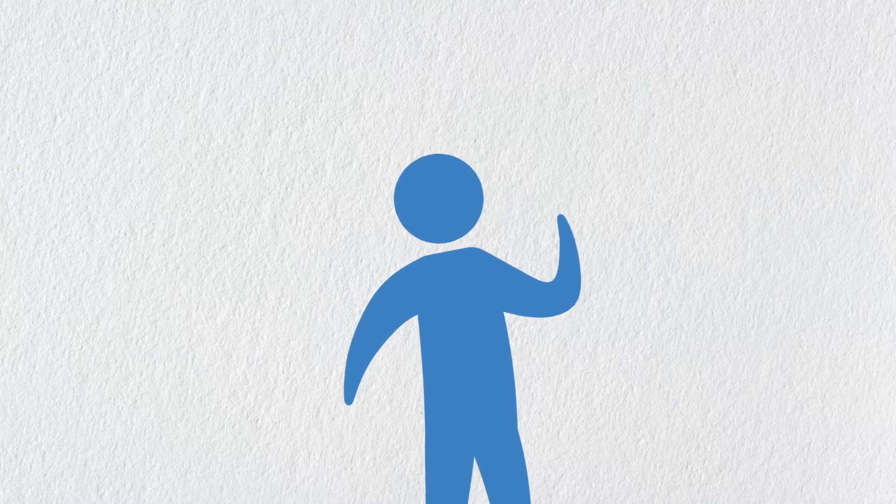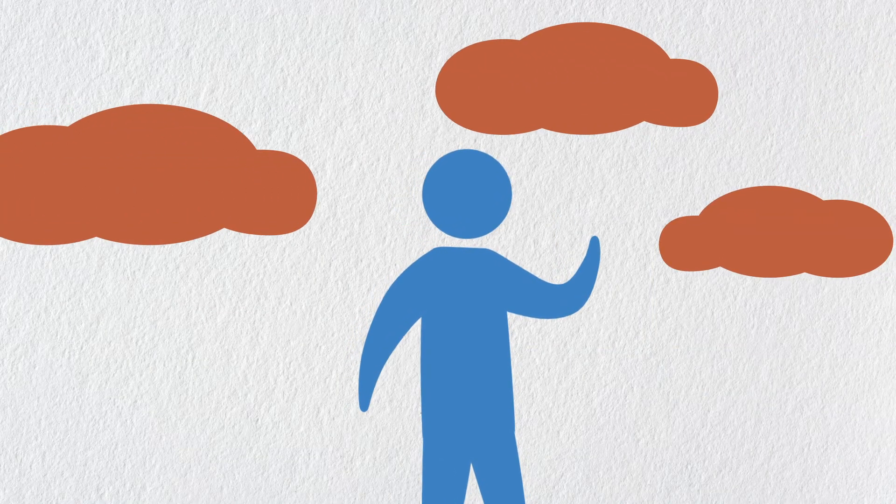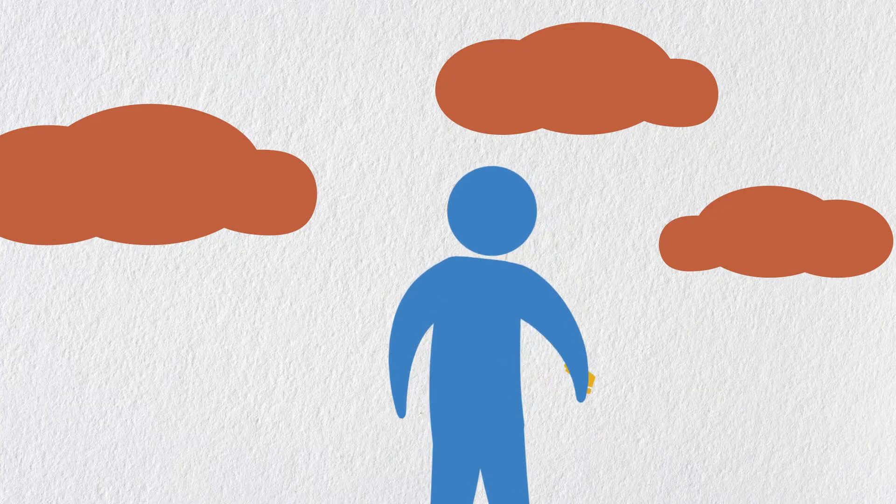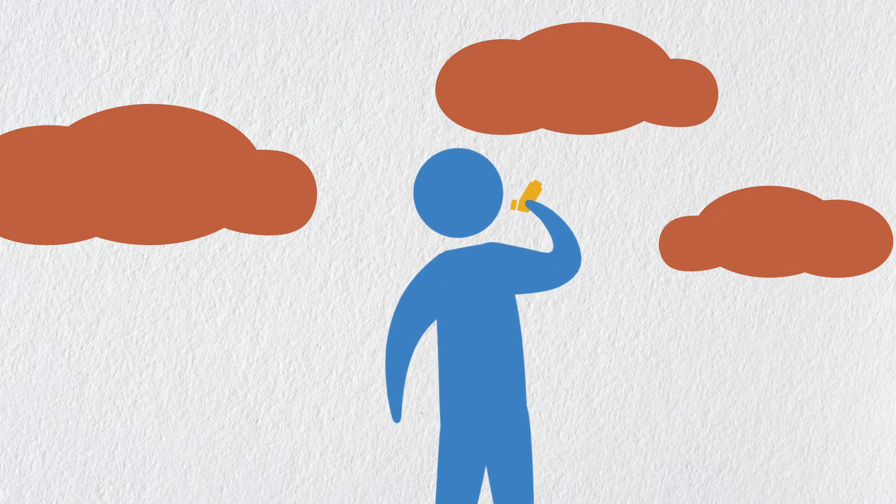Poor air quality is another way the environment can affect our health. When there's pollution in the air, it's especially dangerous for people with asthma.